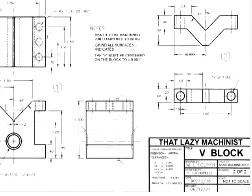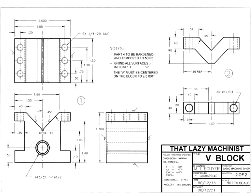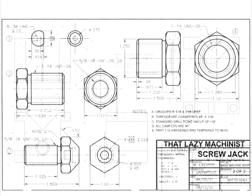If we look at the whole drawing, we find there are no specific tolerances on this print. There is, however, a very bizarre note. It says the V must be centered on the block to plus or minus one thousandth of an inch. In reality, it's a gauche way of trying to tolerance symmetry — which really should be left to geometric tolerancing. Since we haven't seen specific tolerances yet, we'll get back to the geometrics later.